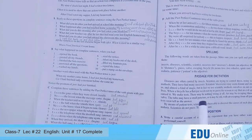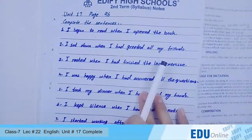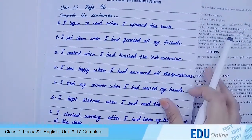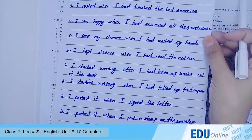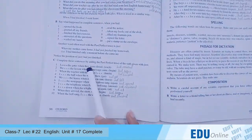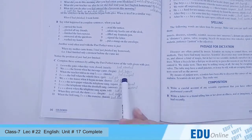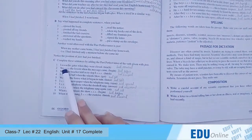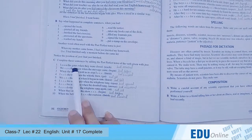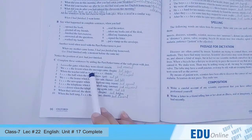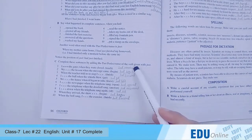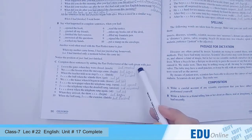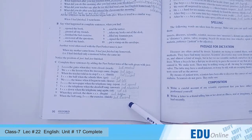Look at this page and see what you have to solve. You have to complete the sentence by adding the past perfect tense of the given word. For example: I had reached the gates when they were closed. In the past perfect tense, 'had' and the second form of the verb are used.